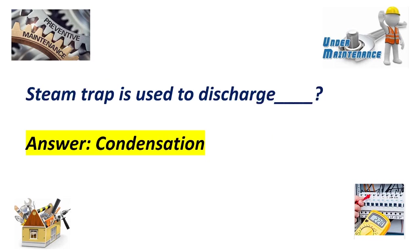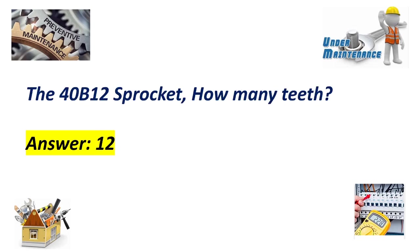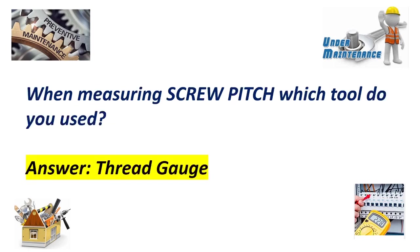A steam trap is used to discharge condensation. The 40-tooth sprocket — how many teeth? Answer: 12. When measuring screw pitches, which tool do you use? Answer: Thread gauge.